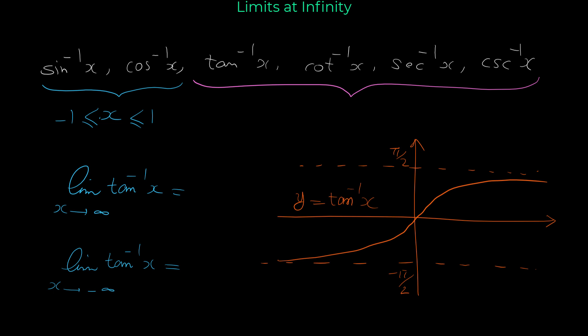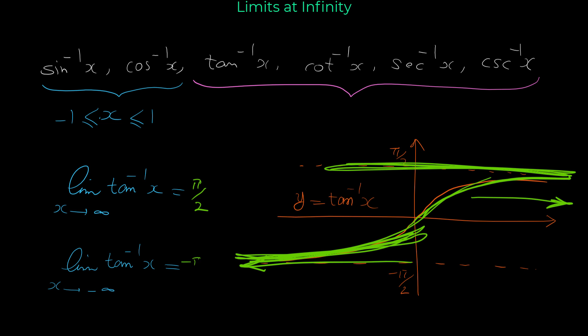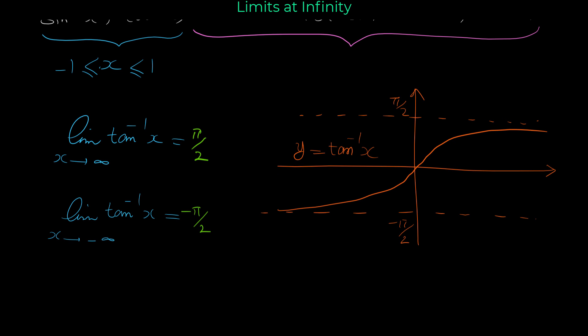When x approaches infinity — going far to the right — the graph of tangent inverse approaches pi over 2. When x approaches negative infinity — going far to the left — the graph approaches the horizontal line y equals negative pi over 2, so that limit is negative pi over 2. The best way to find these limits is to remember this graph.